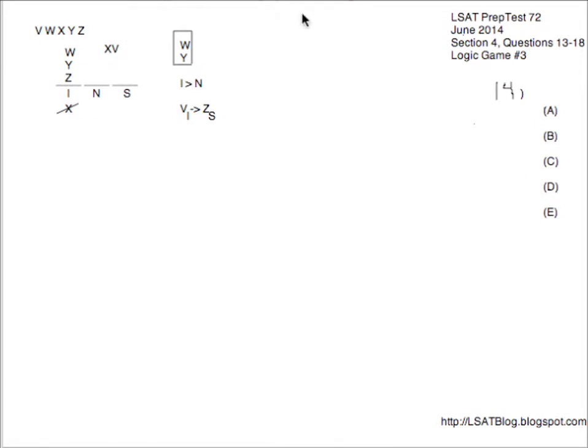Next number 14. If Y and Z were both in Iceland, what's the minimum that we could have in Sweden? Well if Y and Z were Iceland we'd have to have W there also because W and Y are always together. Then we'd have X and V left to allocate but they could go pretty much anywhere within N and S. So we could even have zero of them going to Sweden and both X and V going to Norway. That'd be perfectly fine. So our answer for 14 is A. So just pick it and move on.